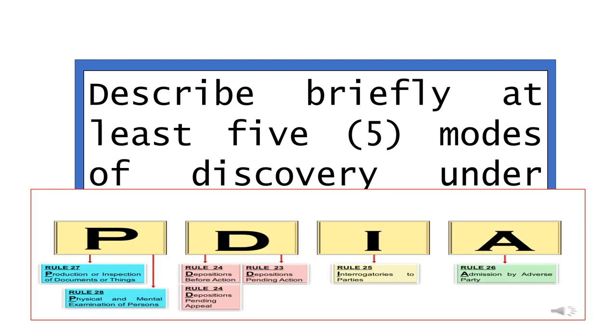A 2000 bar exam question asked to describe briefly at least five modes of discovery under the Rules of Court. If you do not know what we discussed, mahirap siyang i-recall — isa-isahin mo pa yun, ano nga ulit yung Rule 23, Rule 25. But if you know PIDEA, then it's easier to answer. Ginambol natin konti para mas madaling i-recall. That is a 5% question. If you can write PIDEA, even without the brief discussion, at least guaranteed ka nang 3%.